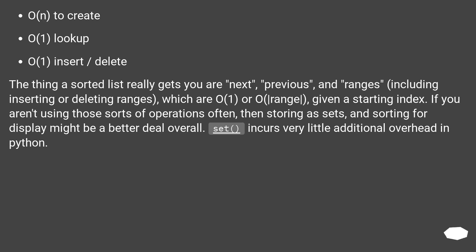The thing a sorted list really gets you are next, previous, and ranges — including inserting or deleting ranges — which are O(1) or O(|range|) given a starting index. If you aren't using those sorts of operations often, then storing as sets and sorting for display might be a better deal overall. Sets incur very little additional overhead in Python.